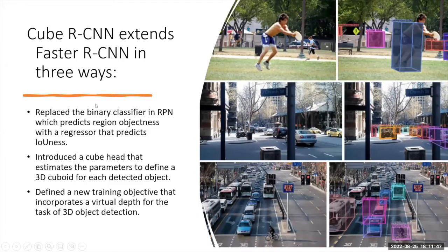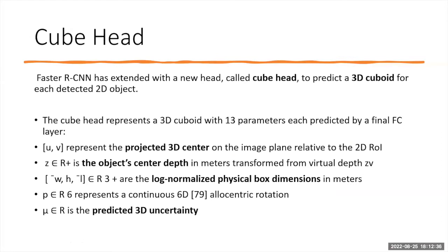The existing Faster R-CNN has been modified to Cube R-CNN by three major steps. We replaced the binary classifier in RPN which predicts objectness with a regressor that predicts the intersection over union. We added the 3D cuboid at the last step. In the third step, we introduce virtual depth, which enables data augmentation and improves accuracy.